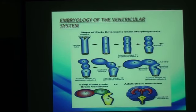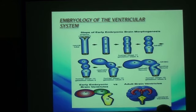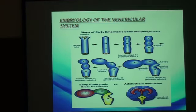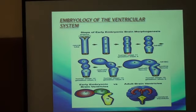In embryological terms, in the brain we have the neural tube, developed from a neural plate, which is formed in the early period of gestation. Later on, both ends close. The anterior end gives rise to the brain, and the posterior end gives rise to the spinal cord.